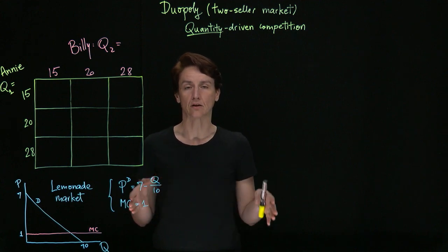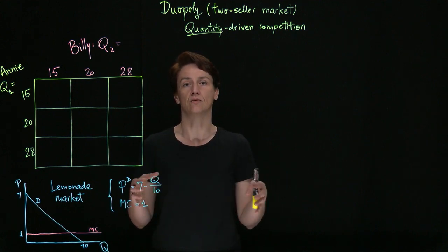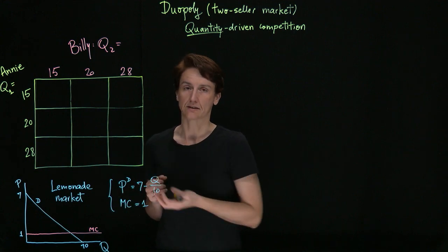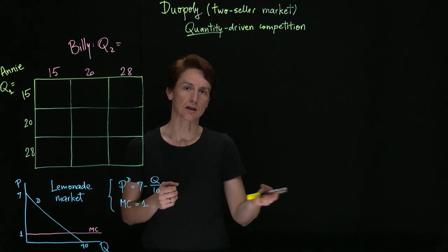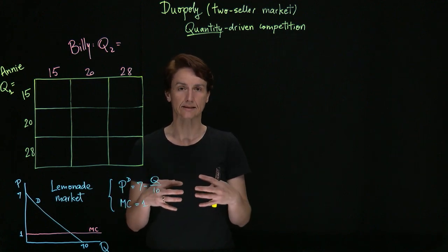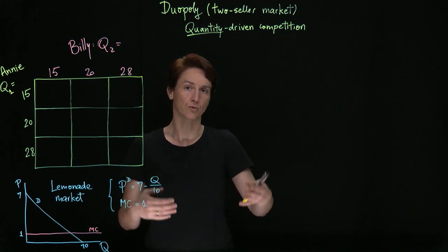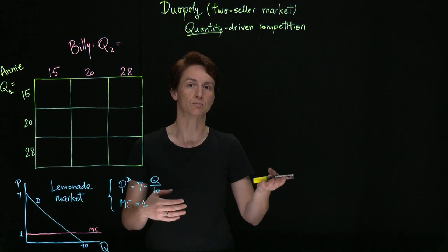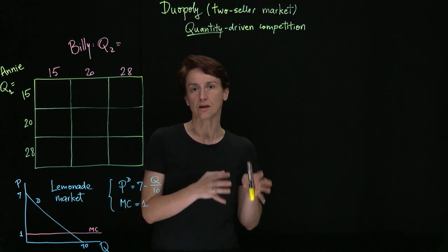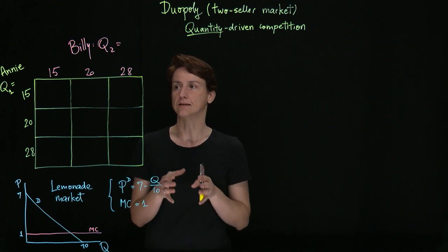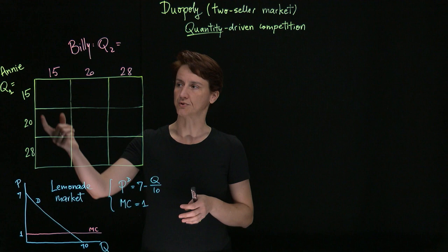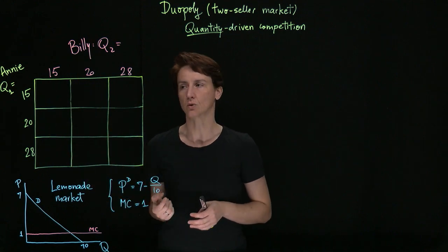Then depending on how much is available overall in this market, a certain price will dominate, because they each want to sell all of the lemonade they've produced. So if they've made collectively a lot of lemonade, they will be forced to charge a lower price, and the other way around. So if we approach the problem this way, then what they're deciding on is the quantity, and I've put here some numbers that we can work with.